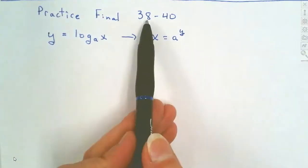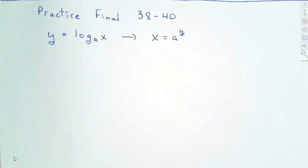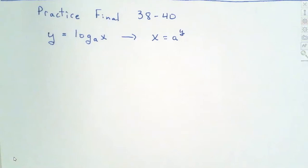On your practice final, questions 38 through 40, we're going to be looking at logarithms. Logarithms are used when we have a small change becoming a big change. For example, earthquakes are on a logarithm scale. When you go from a 3 to 4 on the Richter scale, that's going up by a factor of 10. Each one is a multiple of 10 because they're log base 10. So logarithms are used when a small change equals a large change.